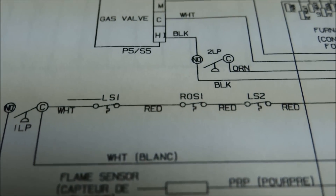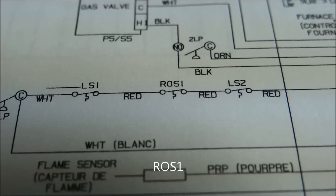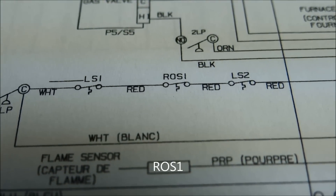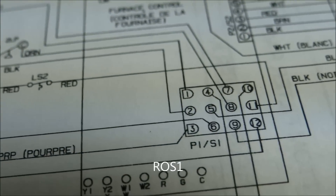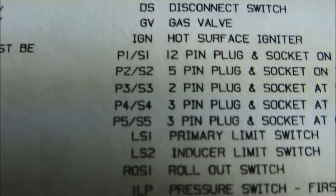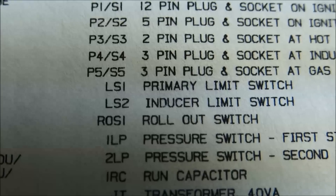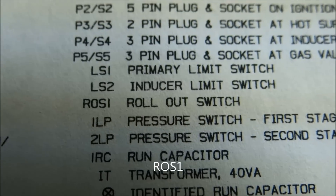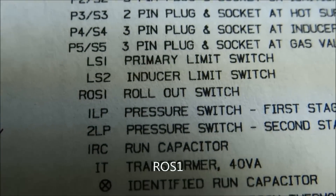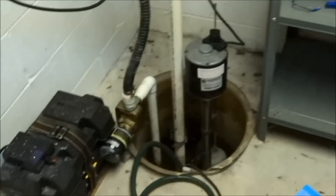I don't know if you can see this, but LS1, ROSI, and LS2 are all three in series, and then they go to this plug. If you look at the legend: LS1 is primary limit switch, LS2 is inducer limit switch, and ROSI is rollout switch. So one of those three is the problem, evidently.